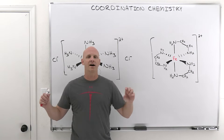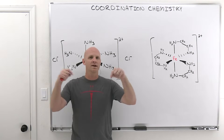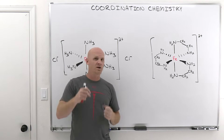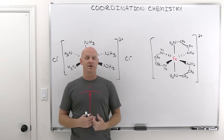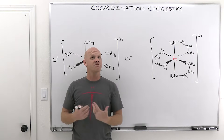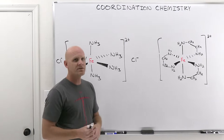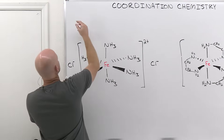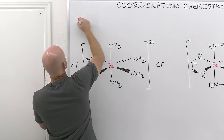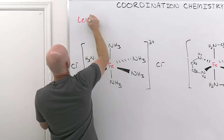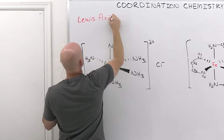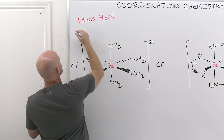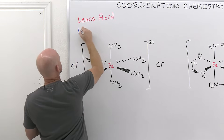Instead of having two different atoms each sharing one electron, we're going to have one atom sharing both electrons and the other atom sharing nothing — just saying thank you very much. When we've got this unequal sharing of electrons, we're dealing with what are called Lewis acids and Lewis bases, which we got introduced to back in the acid and base chapters.